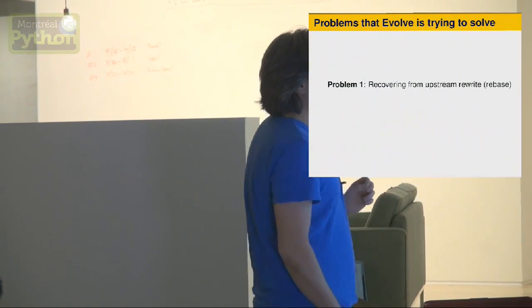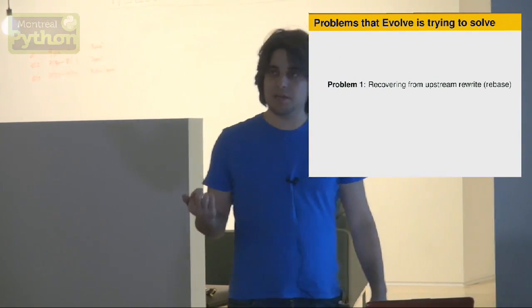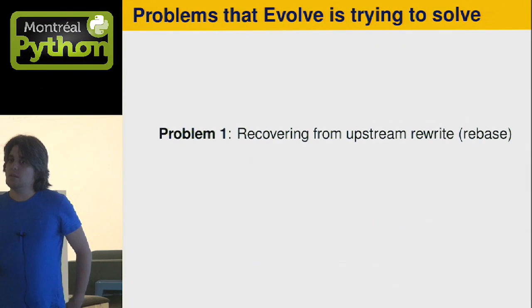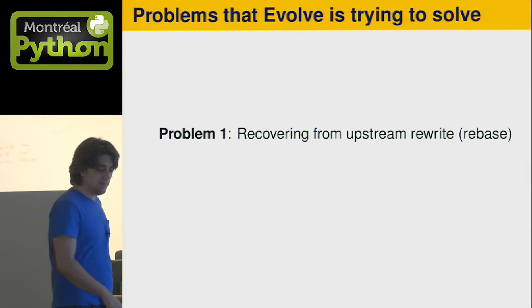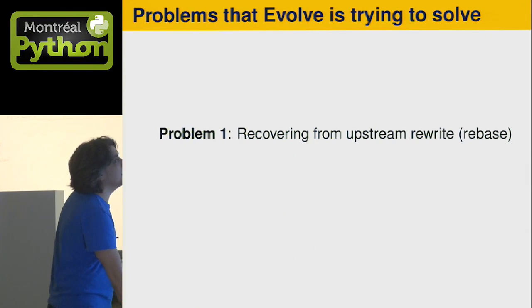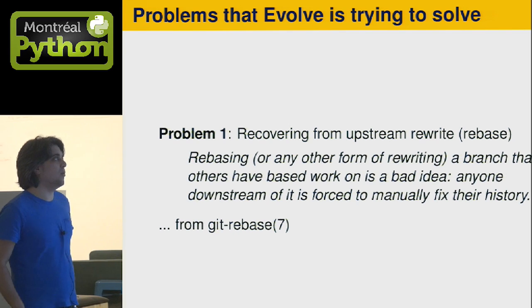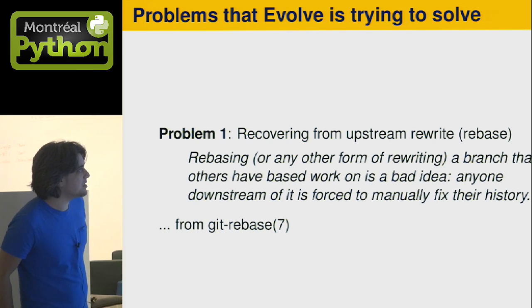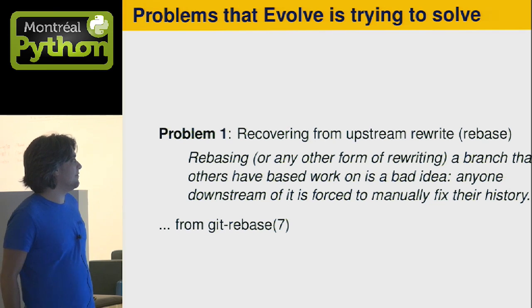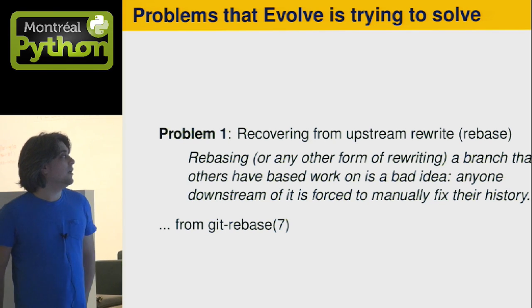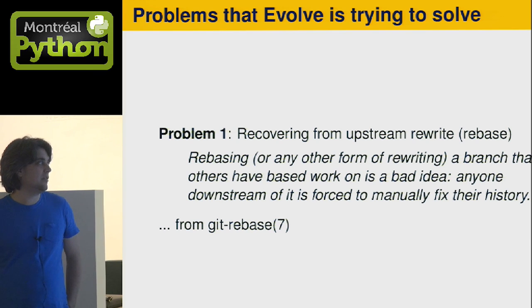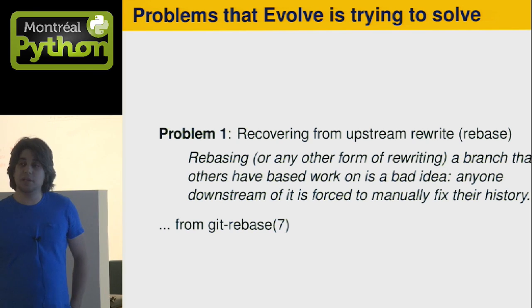The first problem is recovering from an upstream rewrite or a rebase. In the Git man pages, it's written like this: "Rebasing or any other form of rewriting a branch that others have based work on is a bad idea. Anyone downstream of it is forced to manually fix their history." This is from the git rebase man page.